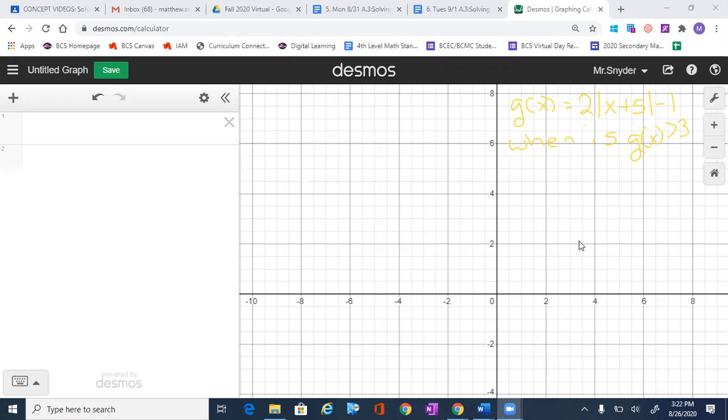The statement over here in yellow says g(x) equals 2 absolute value of x plus 5 minus 1, and we want to know when is g(x) greater than 3. We're going to do this graphically through Desmos.